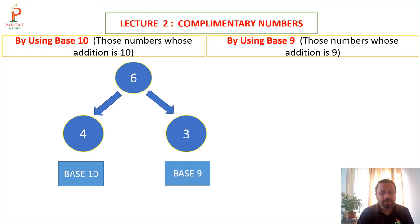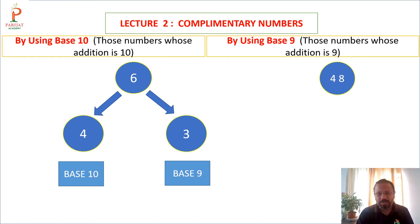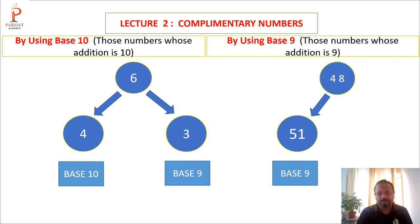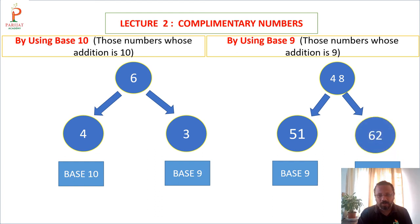For two-digit numbers, we find the complementary of each digit individually. For base 9: the complementary of 4 is 5, and the complementary of 8 is 1. For base 10: the complementary of 4 is 6, and the complementary of 8 is 2. So the complementary of 48 by base 10 is 62.